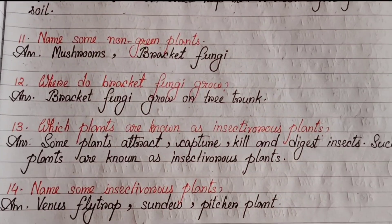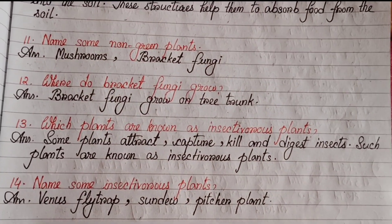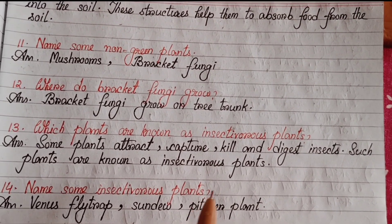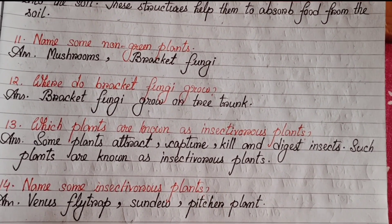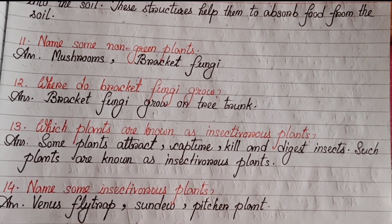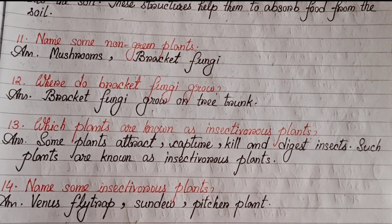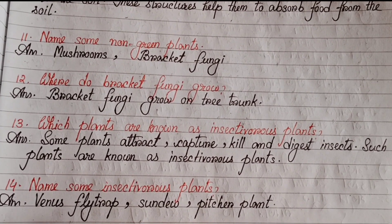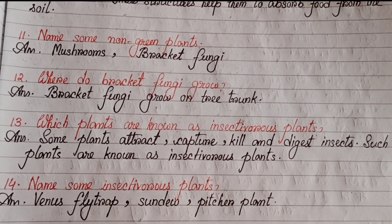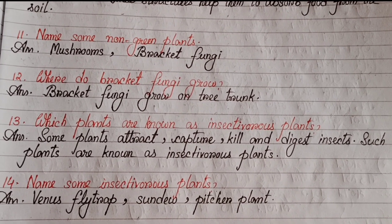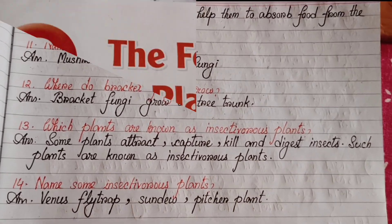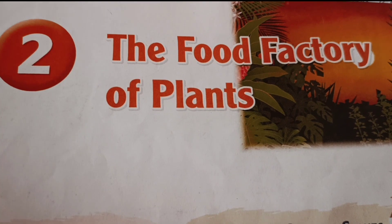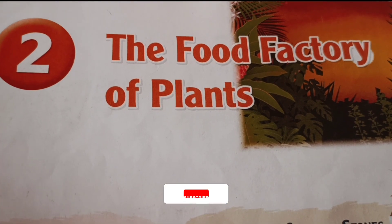Number thirteen: Which plants are known as insectivorous plants? Some plants attract, capture, kill, and digest insects. Such plants are known as insectivorous plants. Number fourteen: Name some insectivorous plants — Venus flytrap, sundew, and pitcher plant.